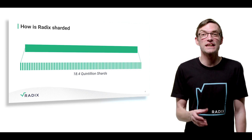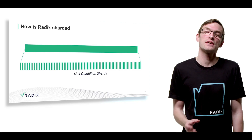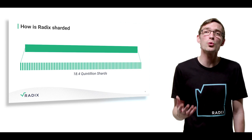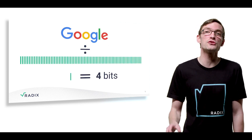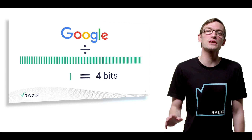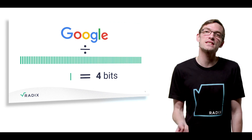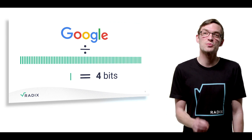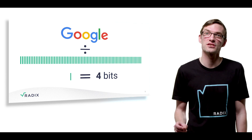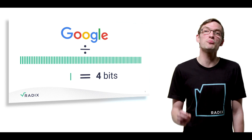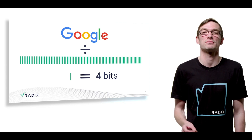To give you a sense of how many shards this is: if you took all the data that Google stores — including YouTube, Google Cloud, and their own copy of the internet — and spread it across 18.4 quintillion shards, there would only be four bits of data per shard.